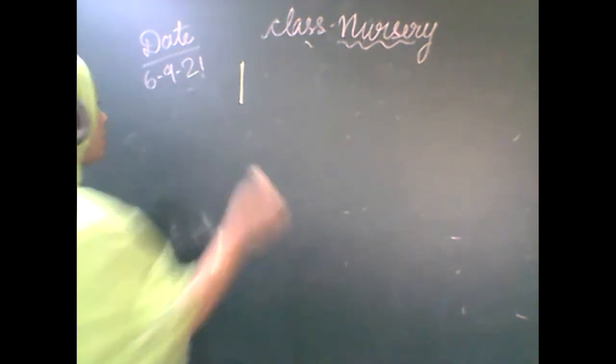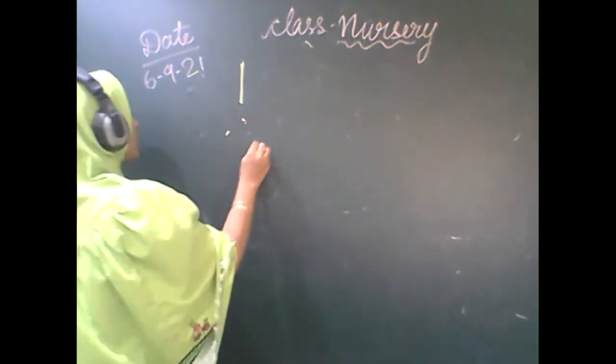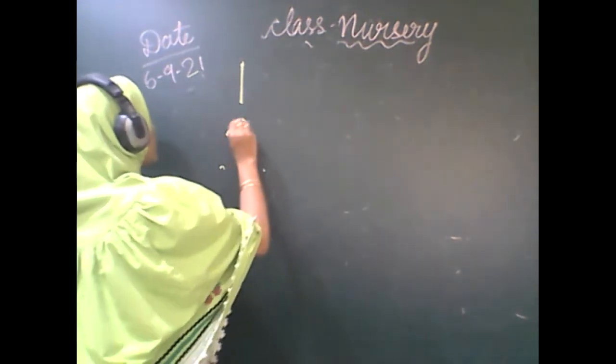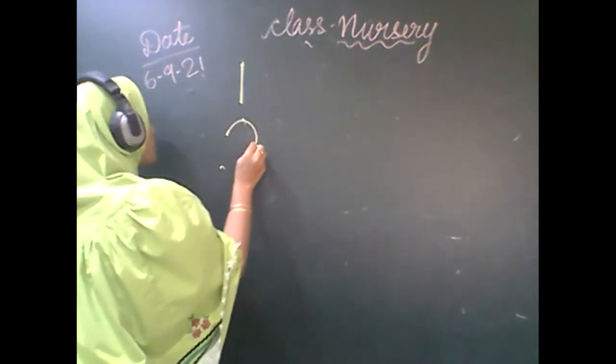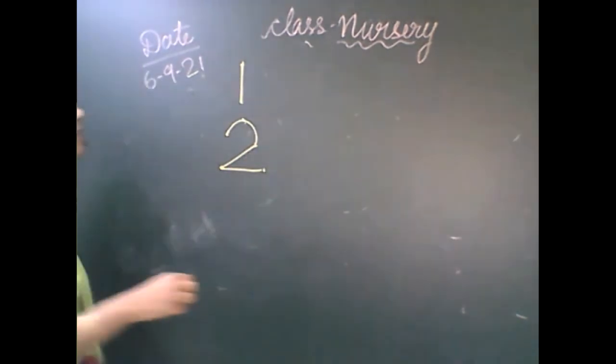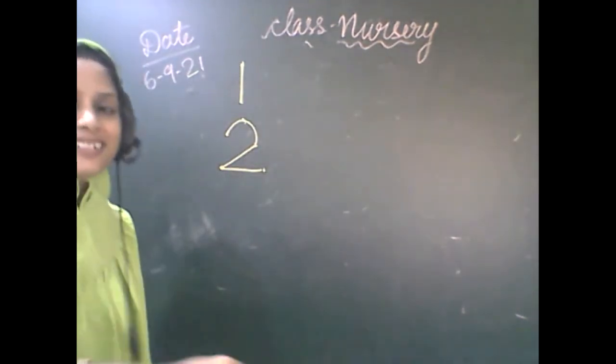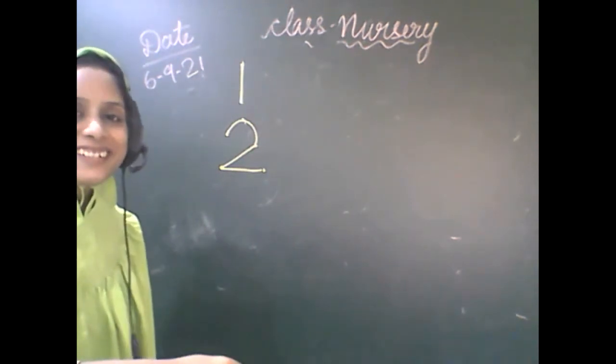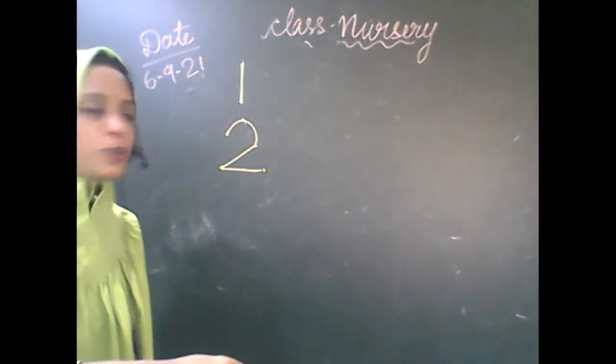Number 1. Then after 1, this kind of dots are given in your copy. So you have to write. You have to make a curve, slanting line and sleeping line. 2. Number 2.